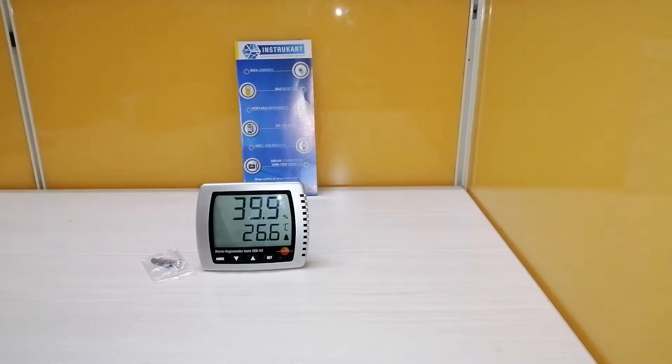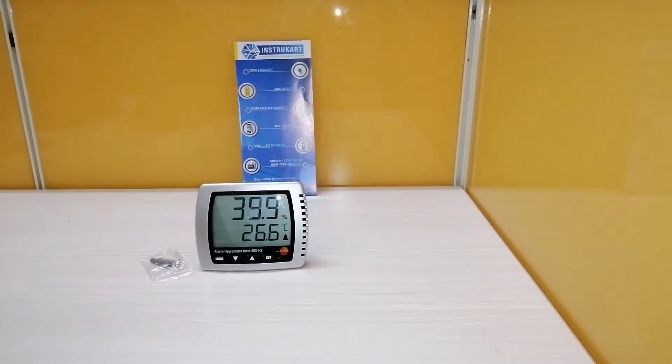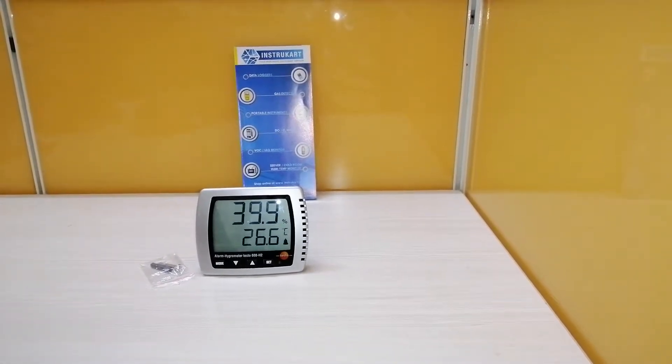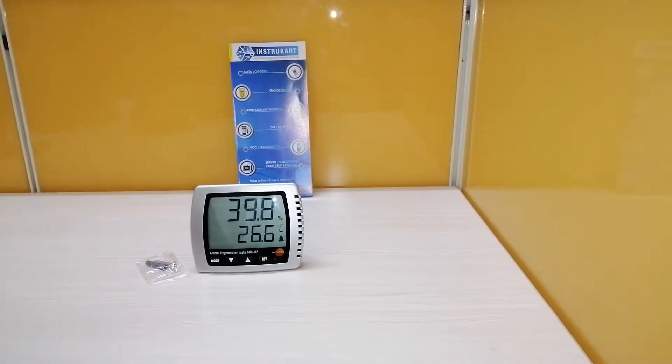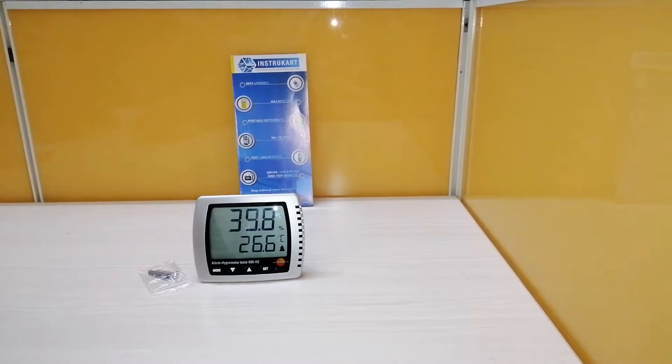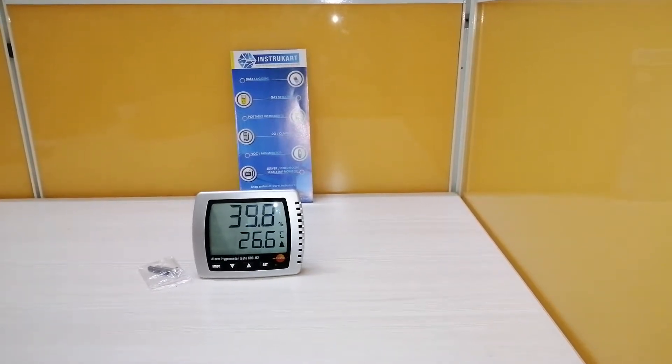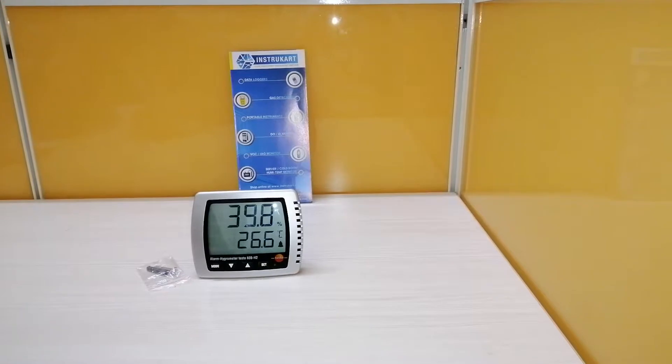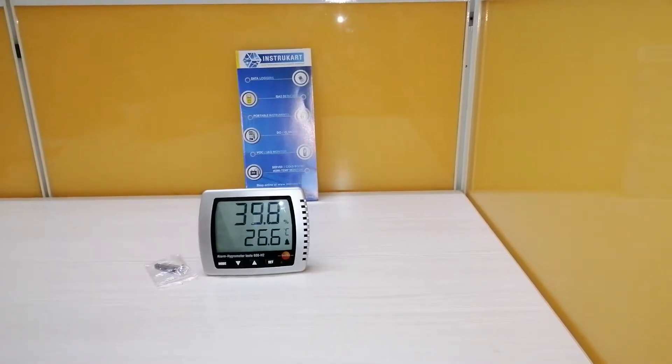Coming to the technical specifications of this product, the temperature measuring range is from minus 10 to plus 70 degrees centigrade with accuracy of plus or minus 0.5 degrees centigrade. The humidity measuring range is from 2 to 98% RH with accuracy of 2% RH.